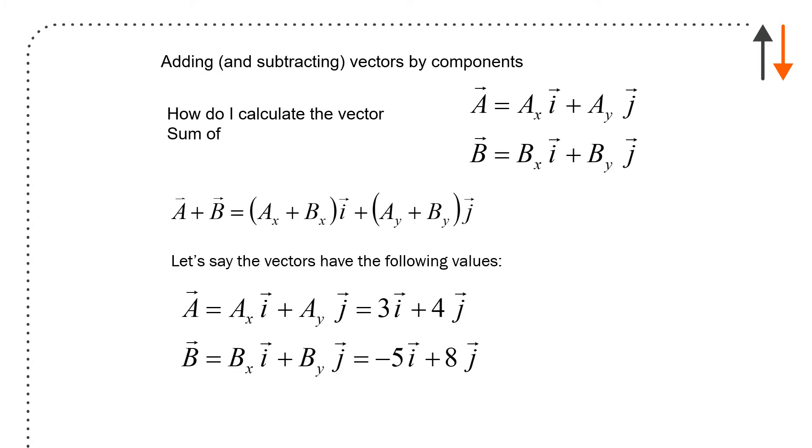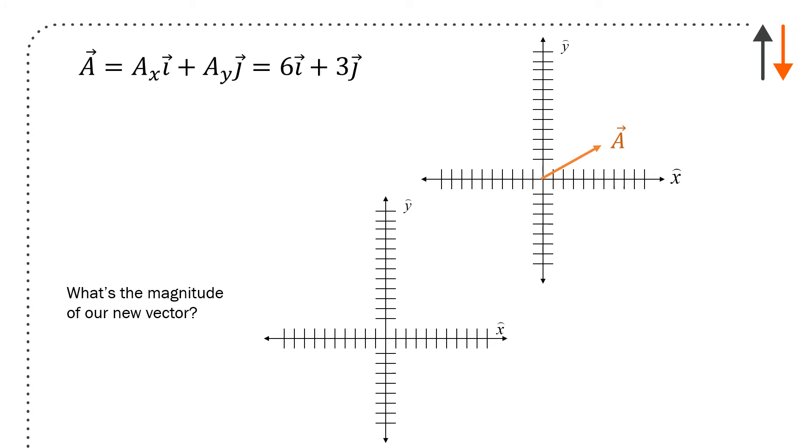So one of the things you have to get used to is to describe what's happening with a vector in terms of simple mathematical operations. So if I know that A is AX in the I direction, AY in the J direction, B is BX in the I direction, BY in the J direction, I can add A and B together by adding up the I components and the J components separately. And say, for example, I have a vector and I've defined it as AX, AY, J, but now I'm going to give it numbers. Three plus four, three in the I direction, four in the J direction, and BX, BY or minus five and eight in the I and J directions, respectively.